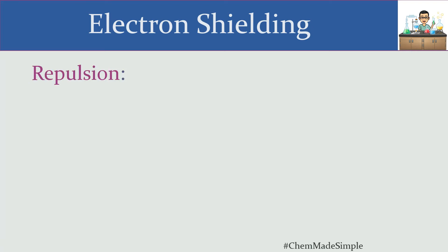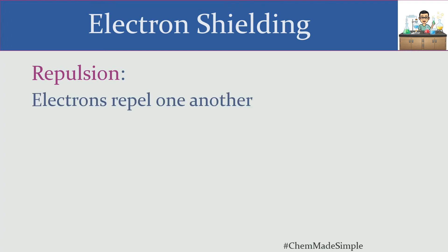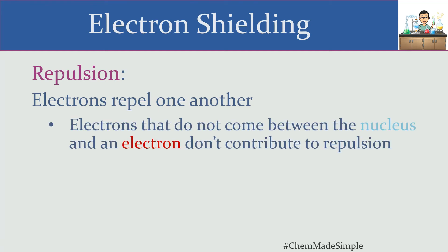If we take a look at the things that offer repulsion, it's going to be pretty much the opposite of what we just talked about. Electrons repel one another. The more electrons we start putting inside an atom, the more repulsion we're going to introduce. Any electrons that come between the nucleus and a specific electron are going to contribute to repulsion. If we have electrons that do not come between the nucleus and a specific electron, they don't contribute to the repulsion.